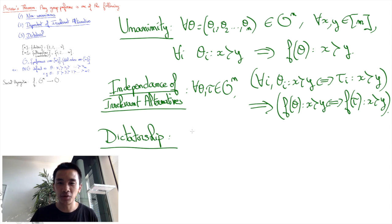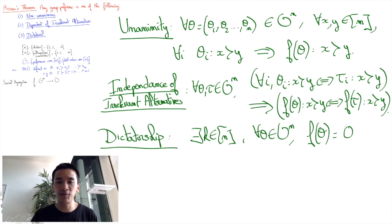Finally, we say that f is dictatorial if there is a dictator K in N such that the group preference is defined to be the preference of the dictator K, i.e., for all theta in ON, f of theta must be the preference of theta K.